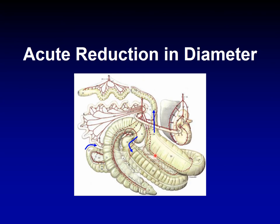So there are three areas that predispose the horse to impaction colic: number one, the area between the right dorsal colon and the transverse colon; number two, the cecocolic junction between the cecum and the right ventral colon; and the third area is the pelvic flexure, the connection between the left ventral colon and the left dorsal colon. These cause impaction colic because the diameter decreases suddenly, not gradually.